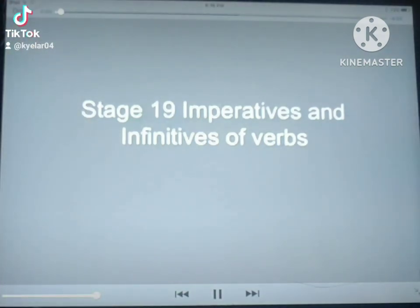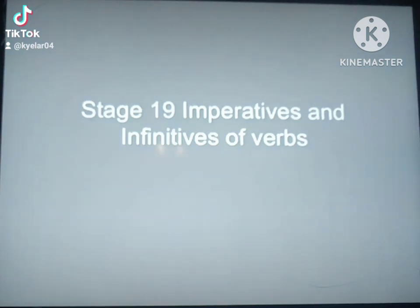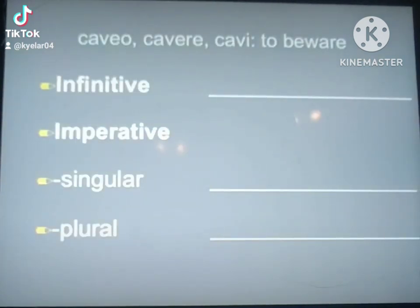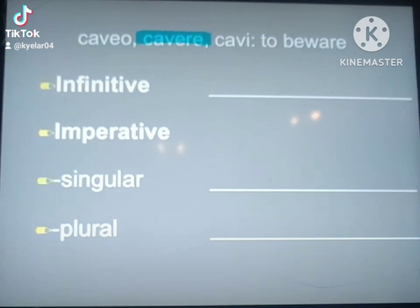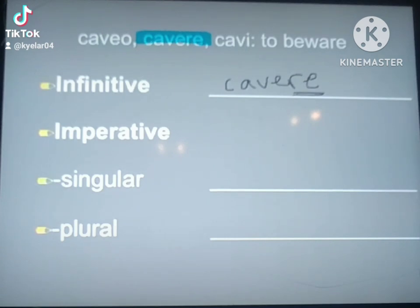Today I'm going to go over how to form your imperatives and your infinitives of verbs in Latin. We're starting off with caveto, a verb that means to be aware. Your first three principal parts are important. The infinitive is always the second part of the verb. With that RE attached, it gives my infinitive form, and it would mean 'to beware.'